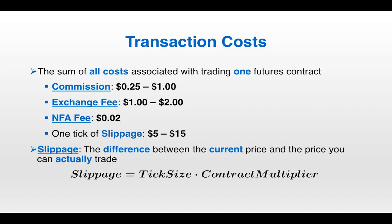Transaction costs are the sum of all costs associated with trading one futures contract, multiplied by however many contracts you're trading. The commission is the fee you pay to the brokerage — it varies but could be anywhere from $0.25 to $1.00. The exchange fee is what you pay to the exchange, ranging from $1 to $2. The NFA fee is just a couple of pennies. And then there's one tick of slippage, which is $5 to $15 depending on the product you're trading.